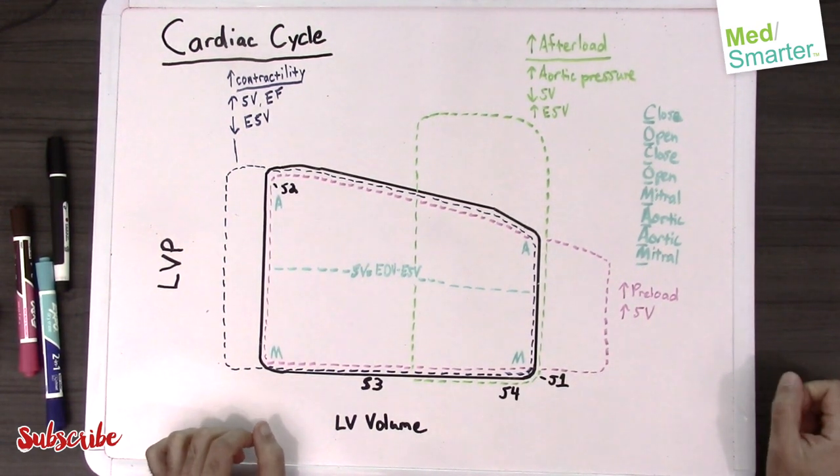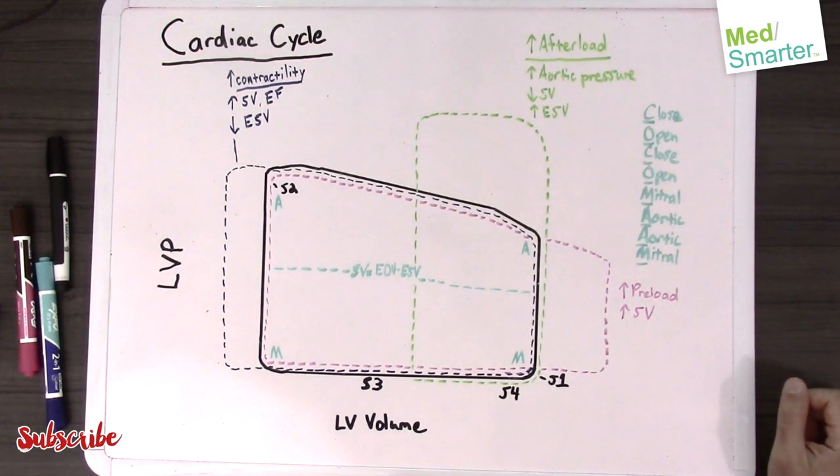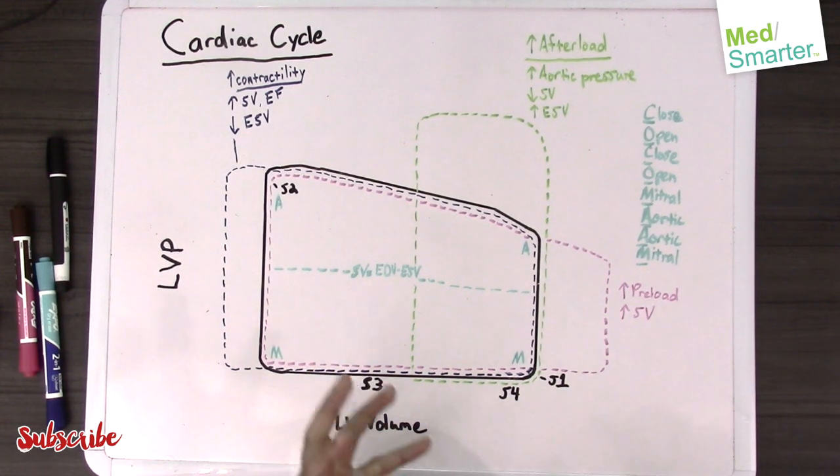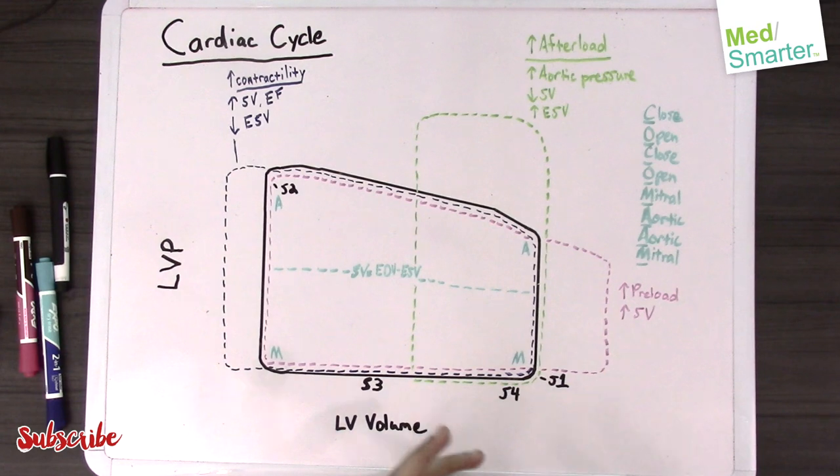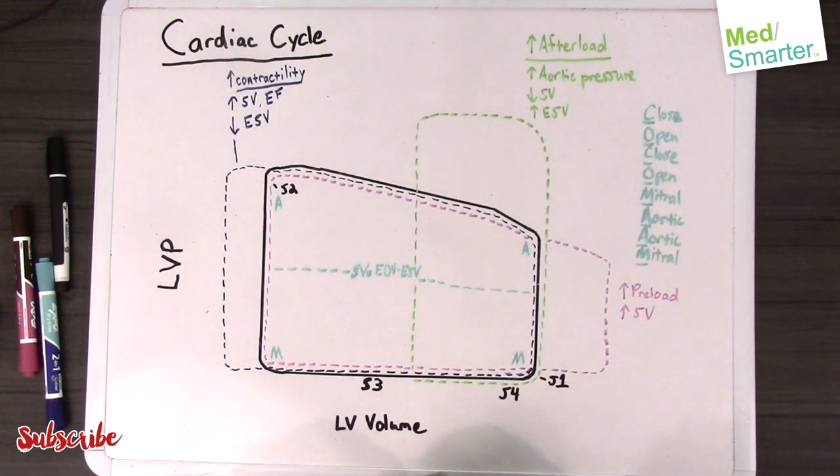Then we have a scenario with increased afterload. Increased afterload, you want to think of scenarios with hypertension, maybe some aortic calcification, aortic thickening - anything that doesn't allow the normal expansion of the aorta and anything that's causing increased back pressure to the heart via the aorta.